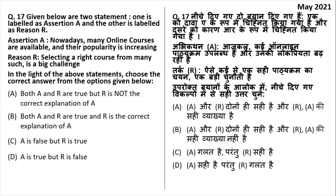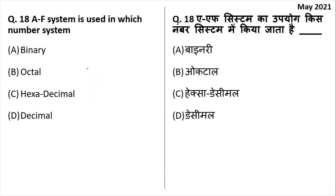Assertion: nowadays many online courses are available and their popularity is increasing — true. Reason: selecting the right course from many options is a big challenge — this is individually true but it is not the correct explanation for why online courses are increasing or becoming popular. Therefore the right answer is option A — assertion is true but reason is not the correct explanation.